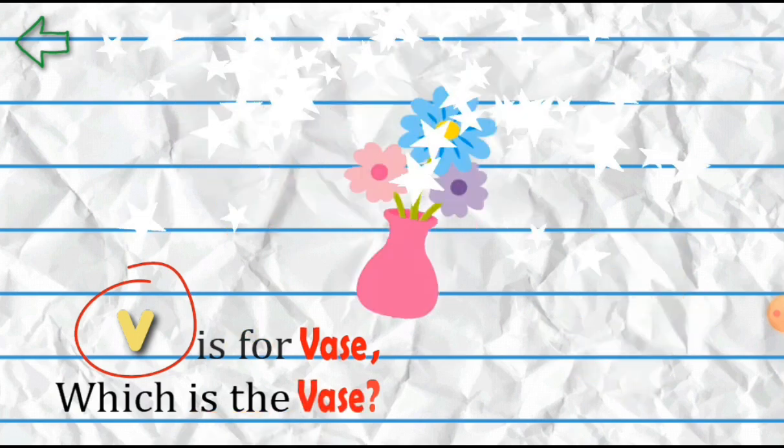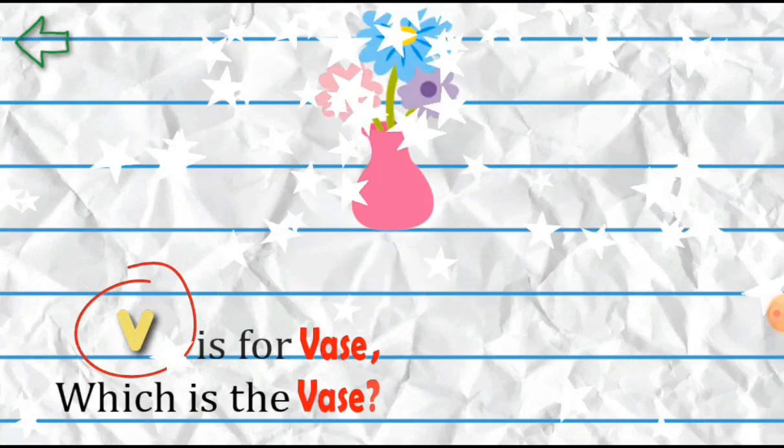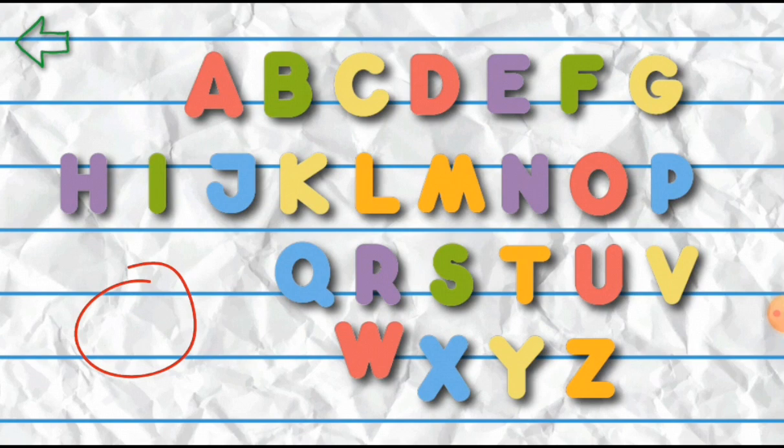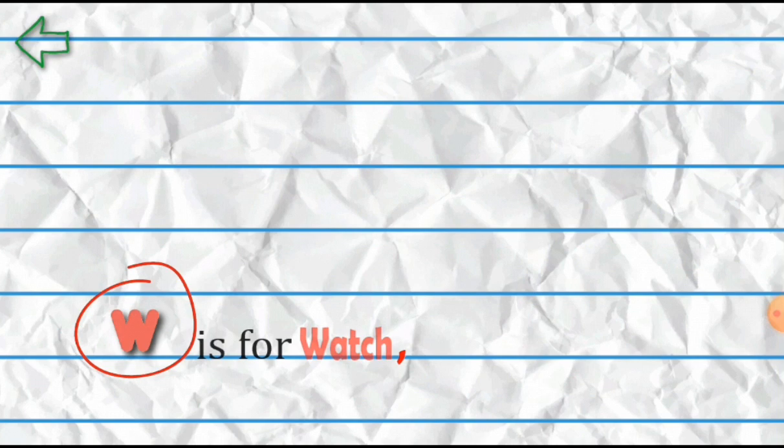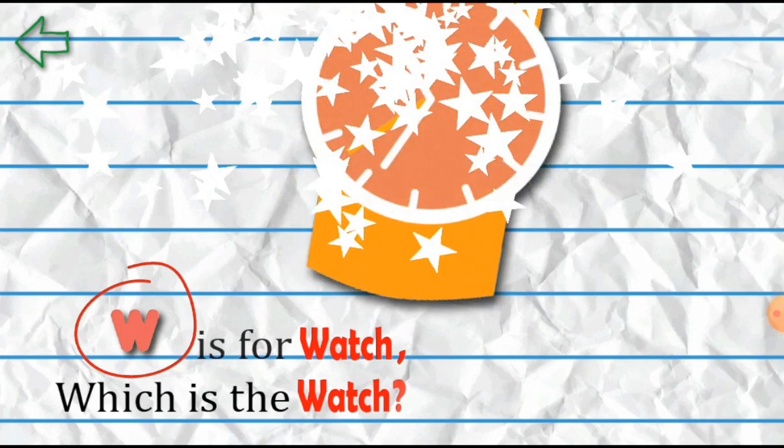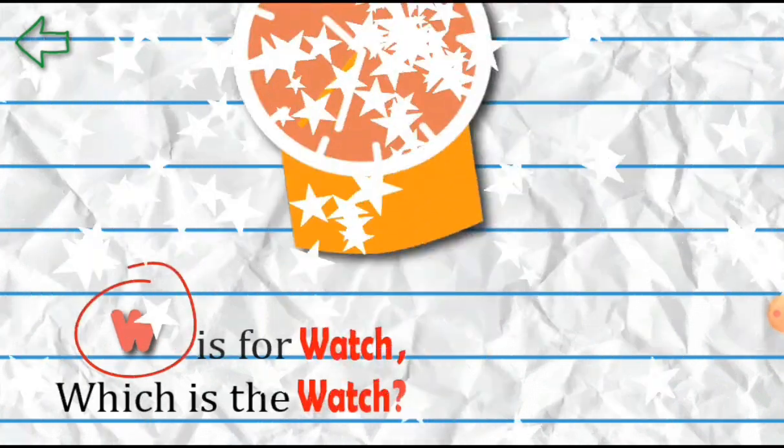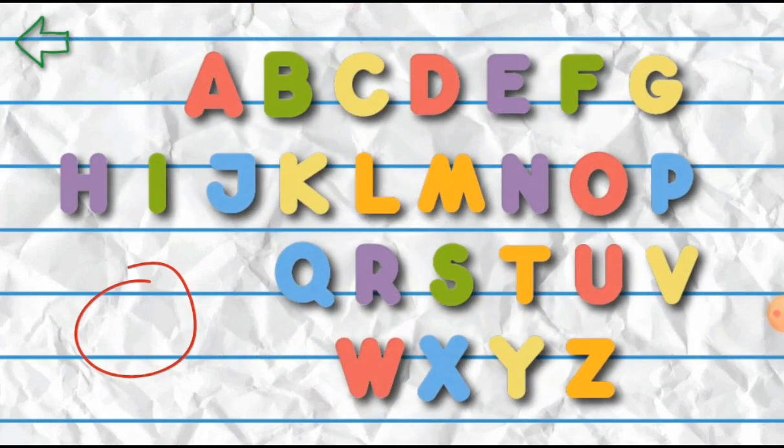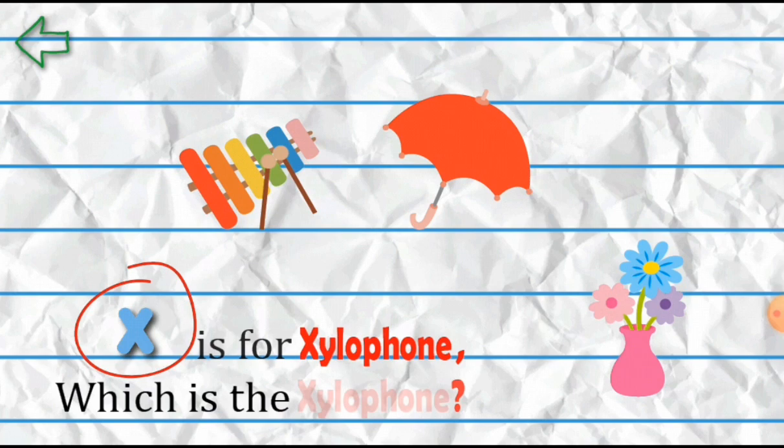W is for Watch. Which is the watch? X is for Xylophone. Which is the xylophone?